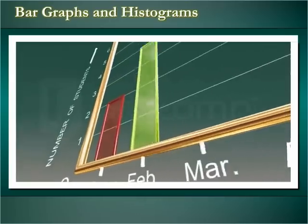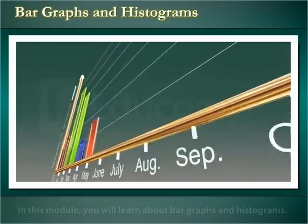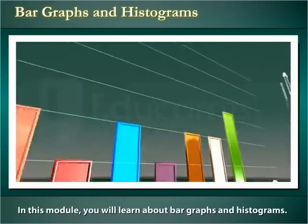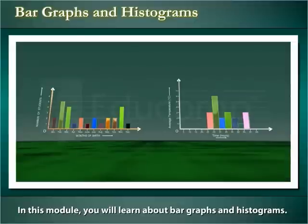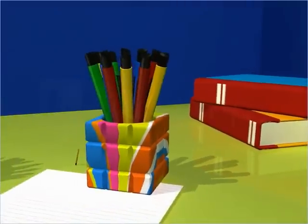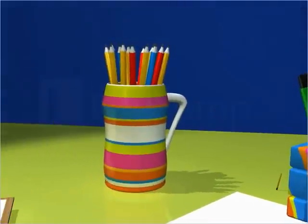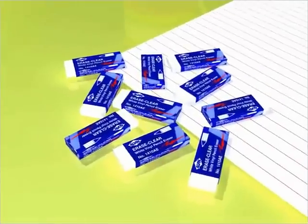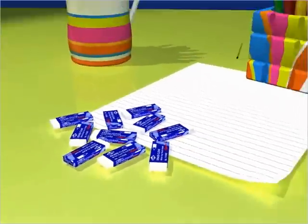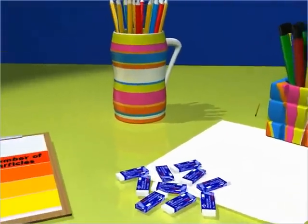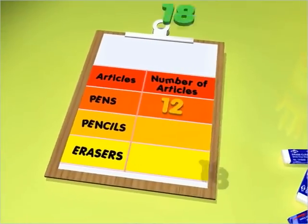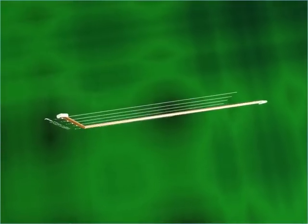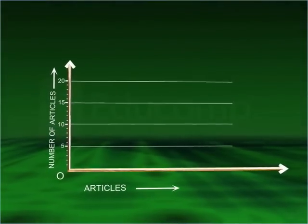In this module you will learn about bar graphs and histograms. If you want to make a list of pens, pencils, and erasers that you own, what would you do? Probably you would make a table depicting the number of pens, pencils, and erasers. But did you know you can also depict this data graphically?